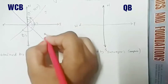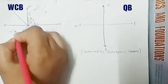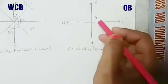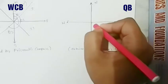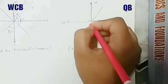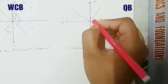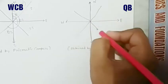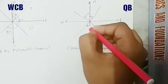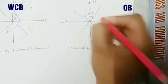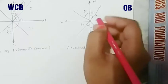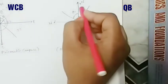In Whole Circle Bearing, the circle is divided into four coordinate systems: first, second, third, and fourth coordinate. But in the Quadrantal Bearing system, angles can be measured clockwise or anti-clockwise from north to south, towards the east and west. Suppose this angle is theta one, theta two, theta three, and theta four.